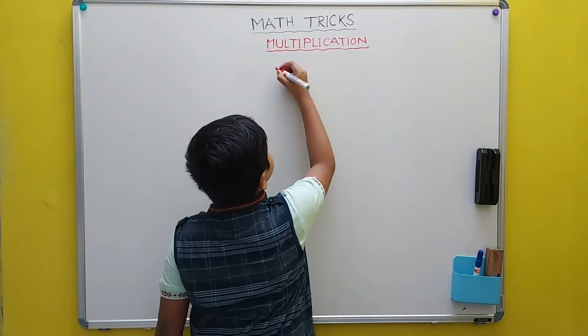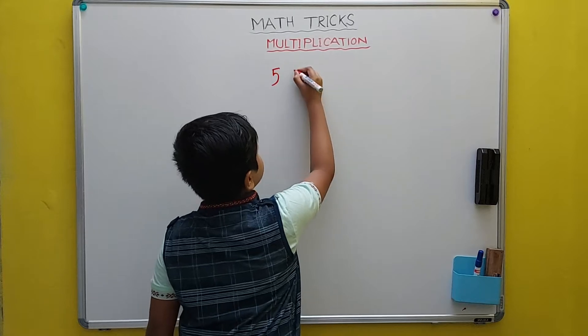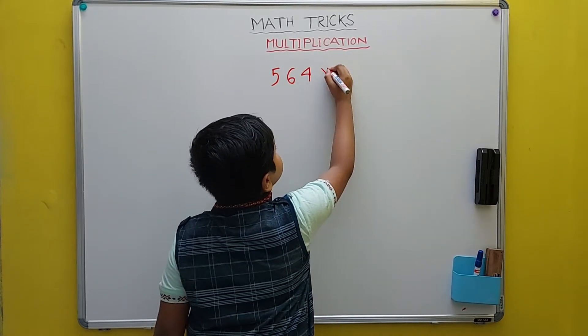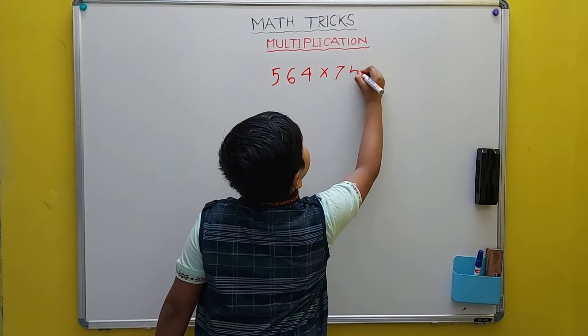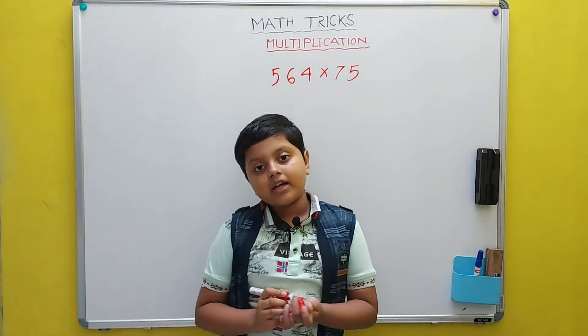Let's take a number: 564 times 75. So, how do we do this?